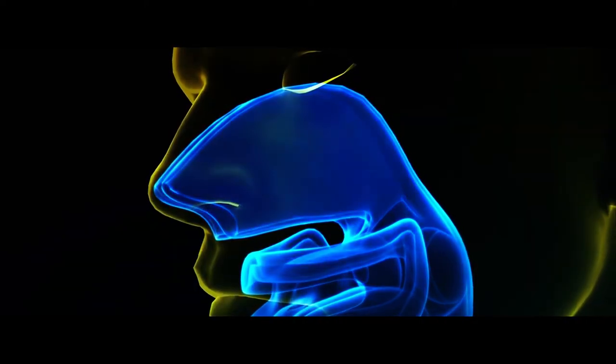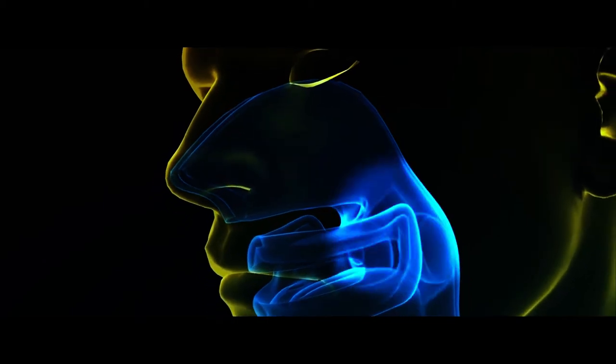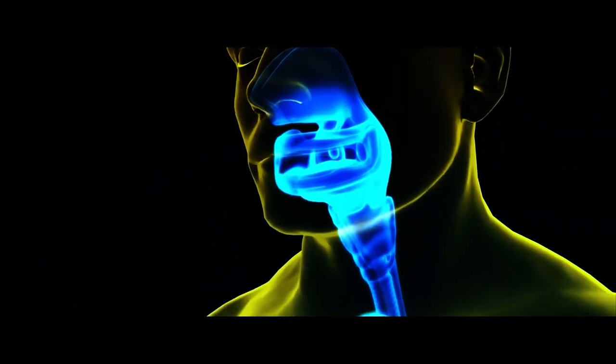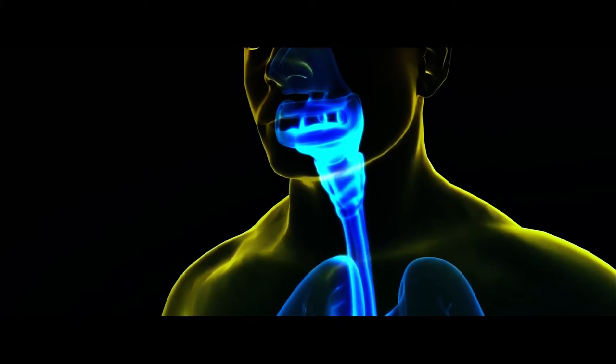Air enters the respiratory system through both the nostrils and the mouth. The air is warmed and passed through the pharynx and then the larynx.